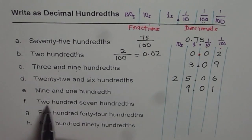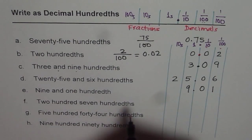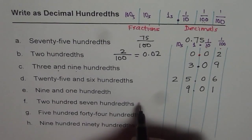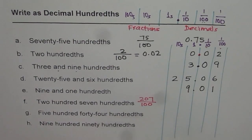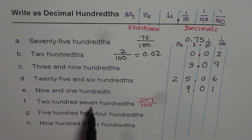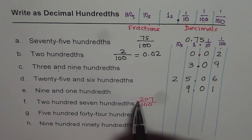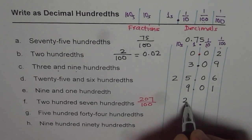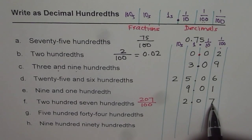Nine and one hundredth: the 1 is in the hundredths position, so we get 9.01. Now, two hundred seven hundredths — this one is tricky. There is no 'and' in between, so the entire phrase 'two hundred seven hundredths' means 207 over 100. When you divide 207 by 100 you get 2.07. Since the number ends in the hundredths position, we read it as two hundred seven hundredths.